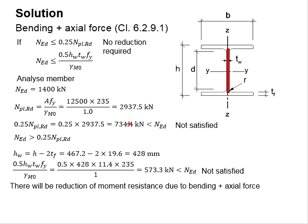In this case, the NEd is actually greater than 25% of the capacity. Therefore, the condition is not satisfied. You may also check for 50% of the resistance given by the web. The 50% resistance is 573.3 kN, which is also less than NEd.